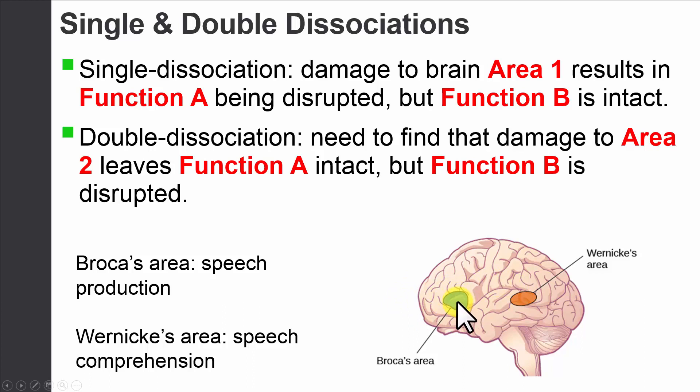Dr. Broca has a bunch of patients who come in with problems producing speech; however, they're still able to comprehend speech. Individually, Dr. Broca has the same issue that Wernicke had — he has a single dissociation. Damage to Broca's area means they have problems producing speech, but they're still able to comprehend other people's speech.